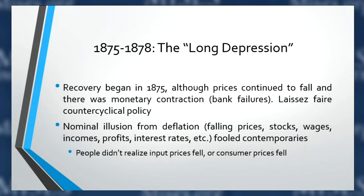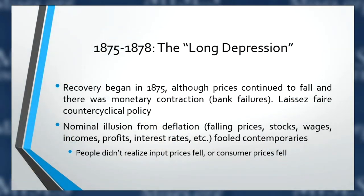Then the so-called Long Depression from 1875 to 1878. When you actually look at the series, recovery began in 1875, although prices continued to fall and there was monetary contraction — enough banks failed so the money supply declined. And there was essentially no counter-cyclical policy: no expansionary monetary policy and no expansionary fiscal policy — effectively laissez-faire counter-cyclical policy.